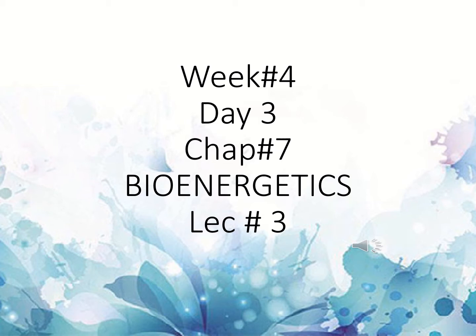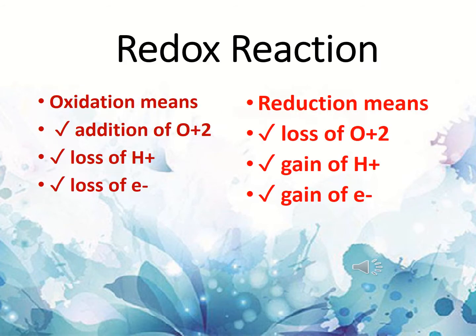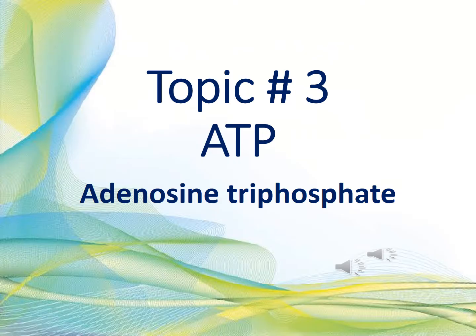Let's recap our previous knowledge. We have learned the difference between oxidation and reduction — both are collectively called redox reactions. Oxidation means addition of oxygen, loss of hydrogen, and loss of electron. Reduction means loss of oxygen, gain of proton, and gain of electron. The third topic of this chapter is ATP.